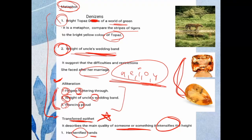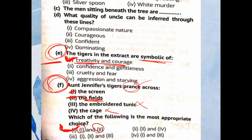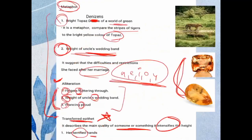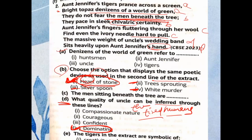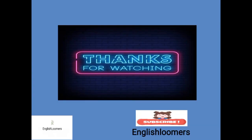Fourth poetic device: symbolism. The tigers symbolize creativity and courage — Aunt Jennifer's desire for freedom, strength, and bravery. So the poetic devices used in this poem are metaphor, alliteration, transferred epithet, and symbolism. I hope the extracts, poetic devices, and rhyming scheme are now clear. In the next class we will discuss the next poem's extracts. Thanks for watching — stay curious, stay motivated!